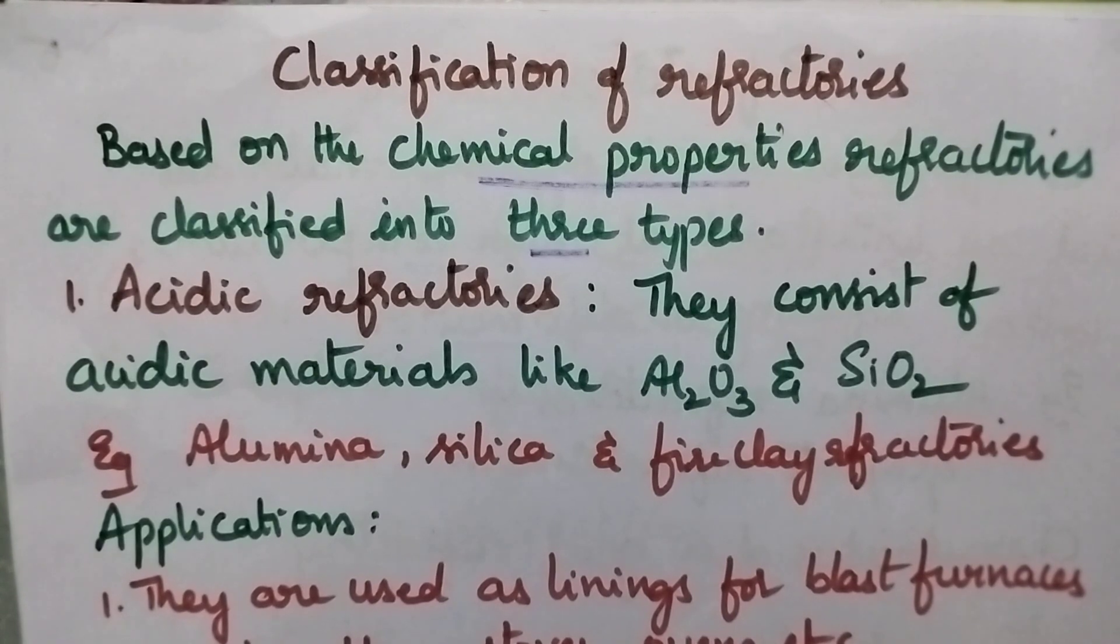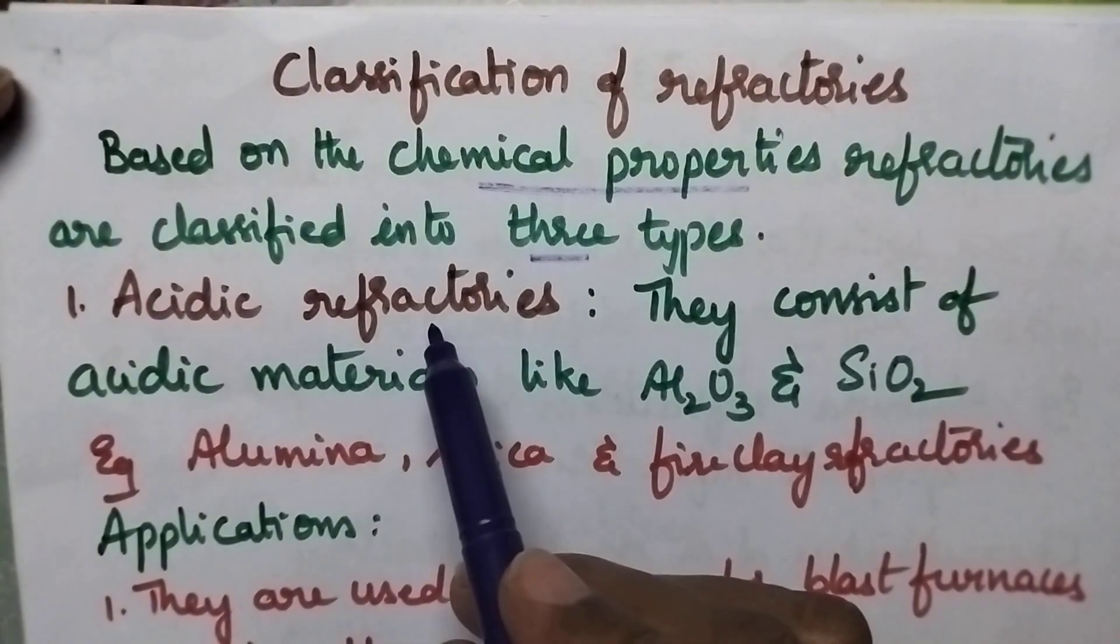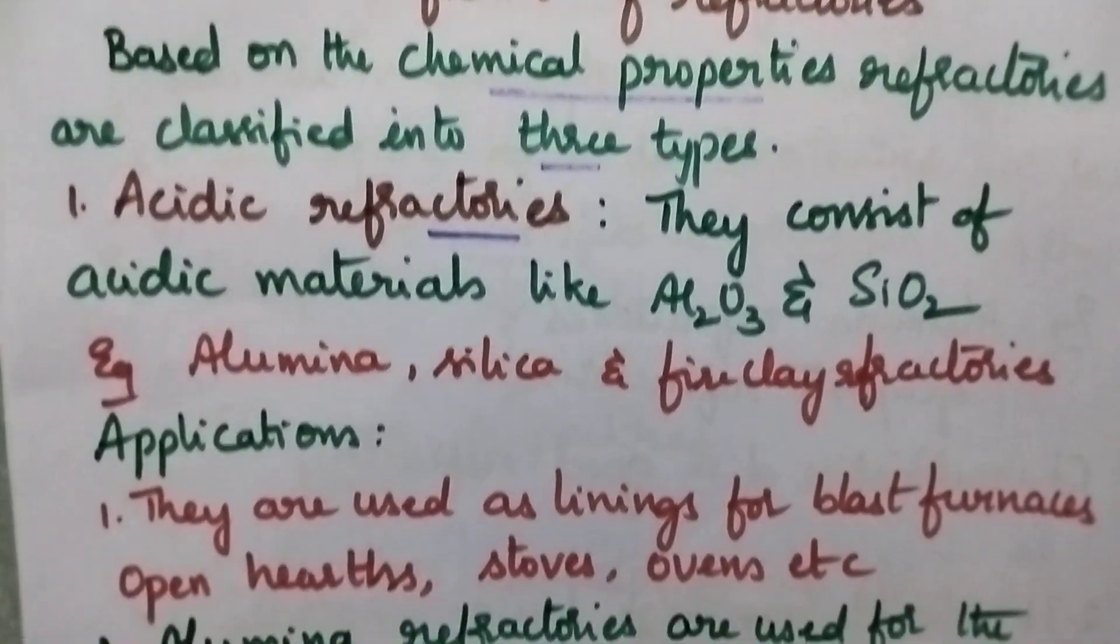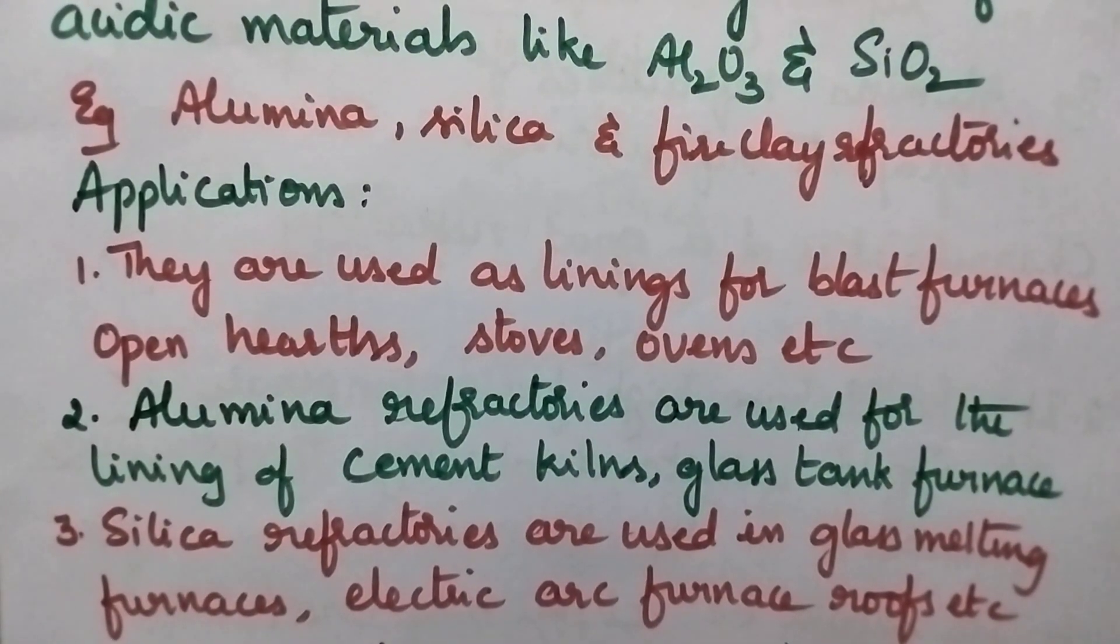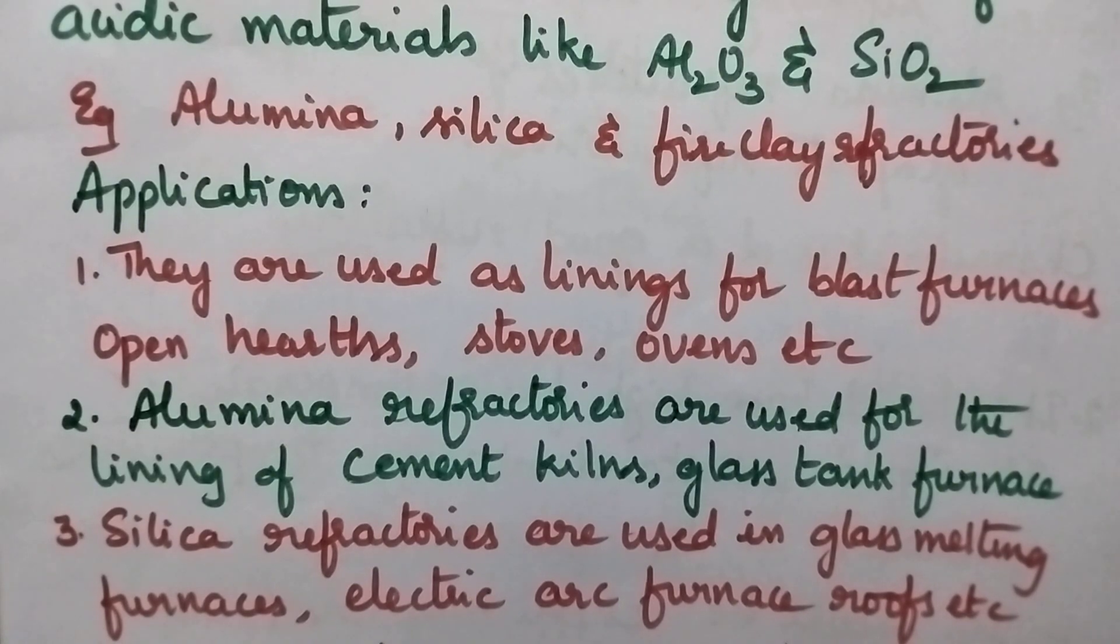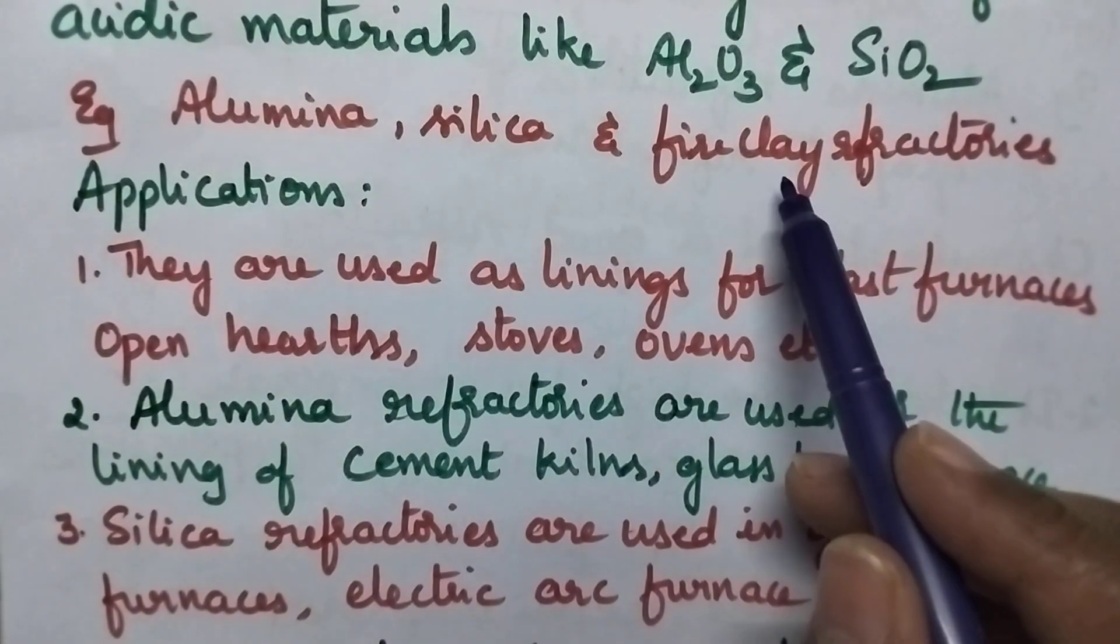Moving to acidic refractories, they generally consist of acidic materials like Al2O3 and SiO2. Good examples include alumina refractories, silica refractories, and fire clay refractories.